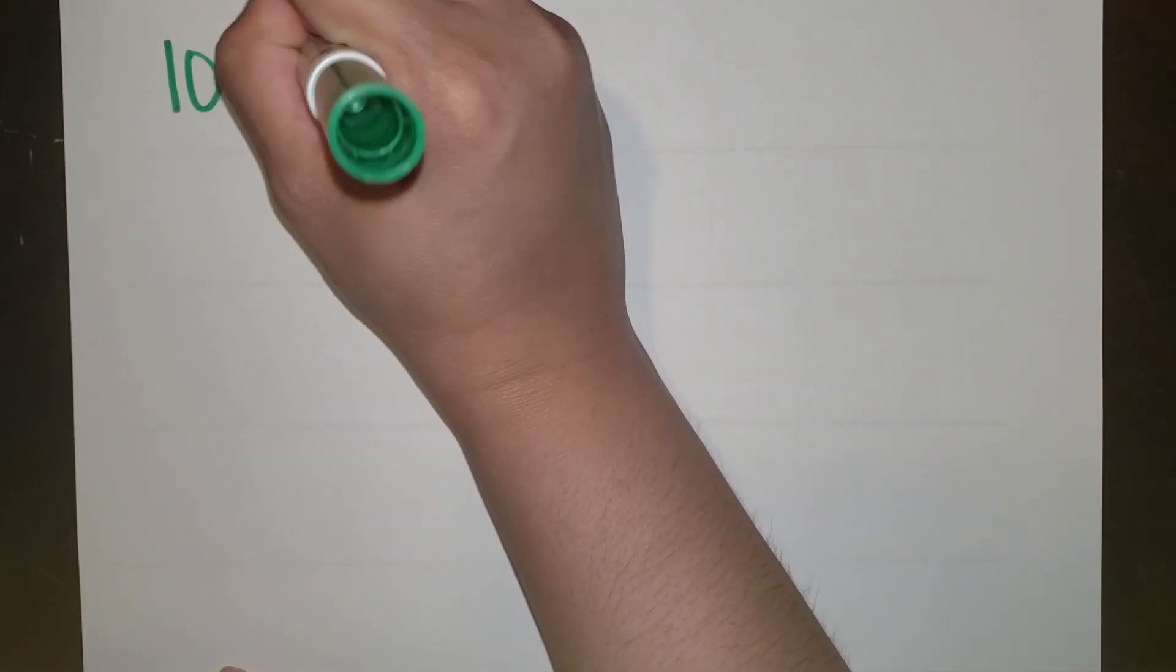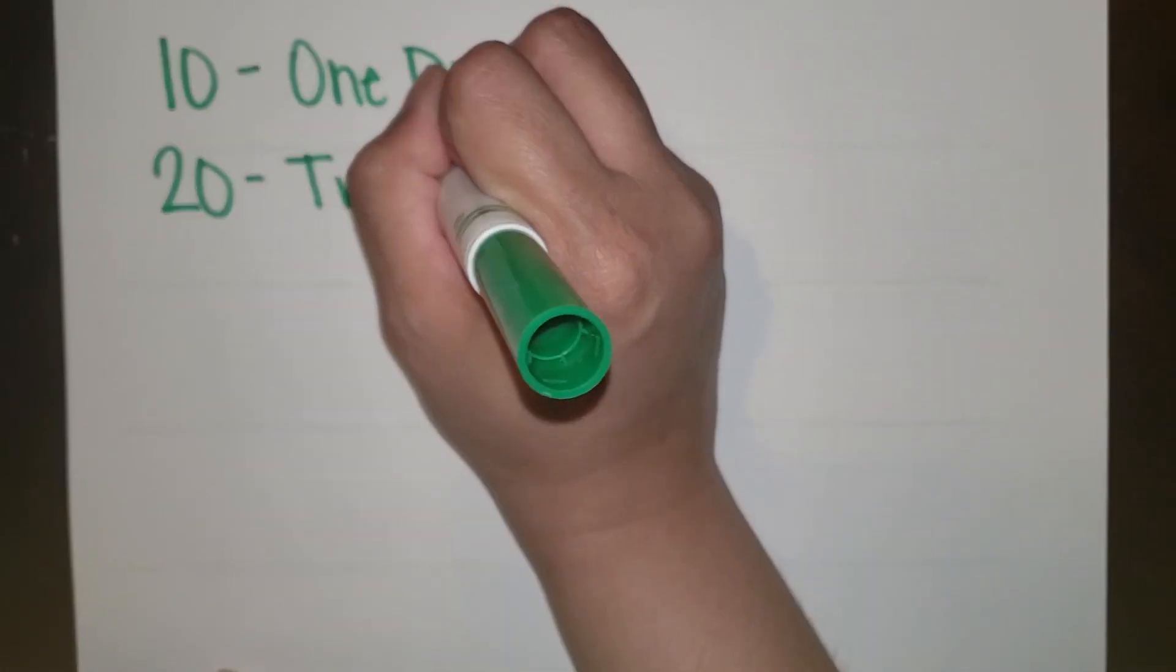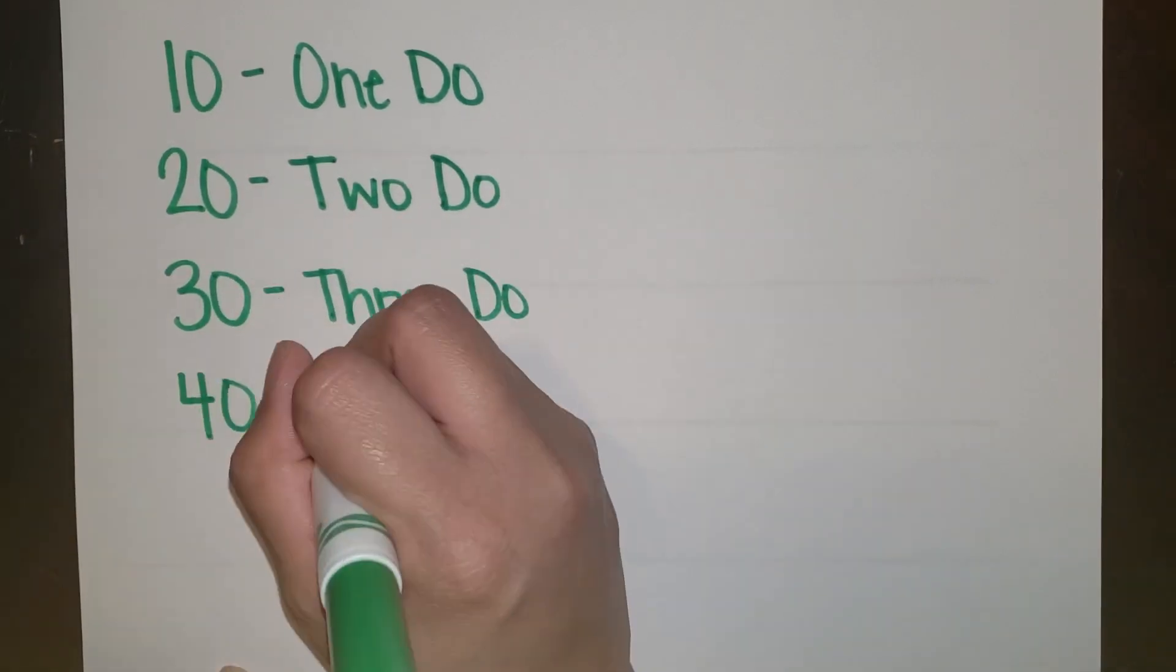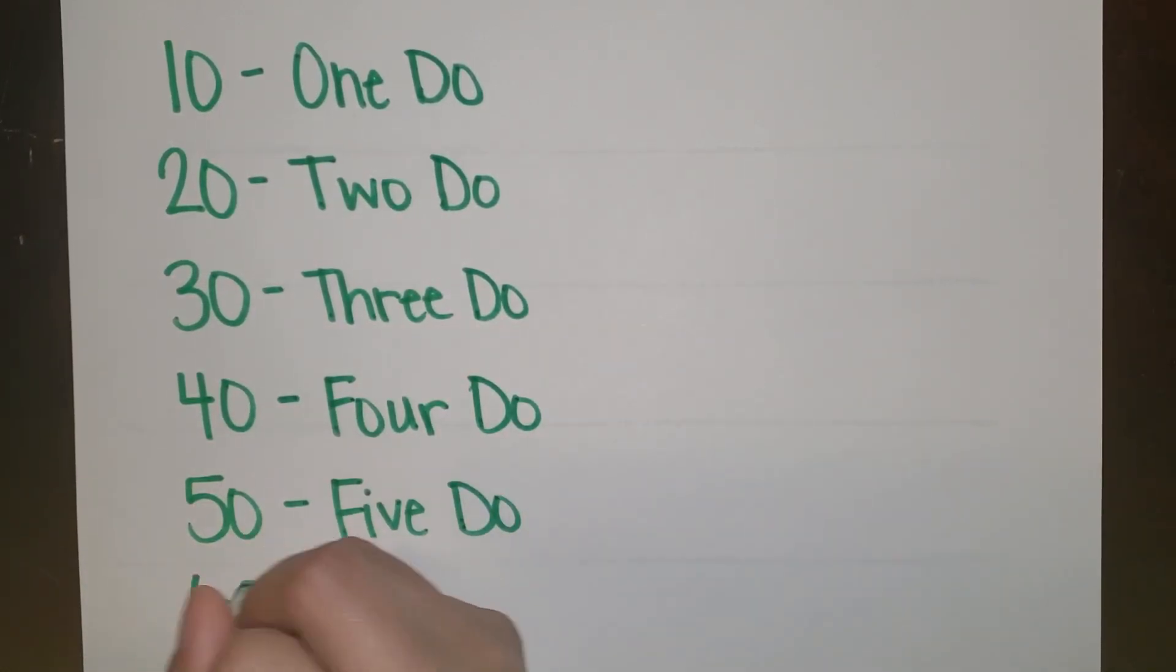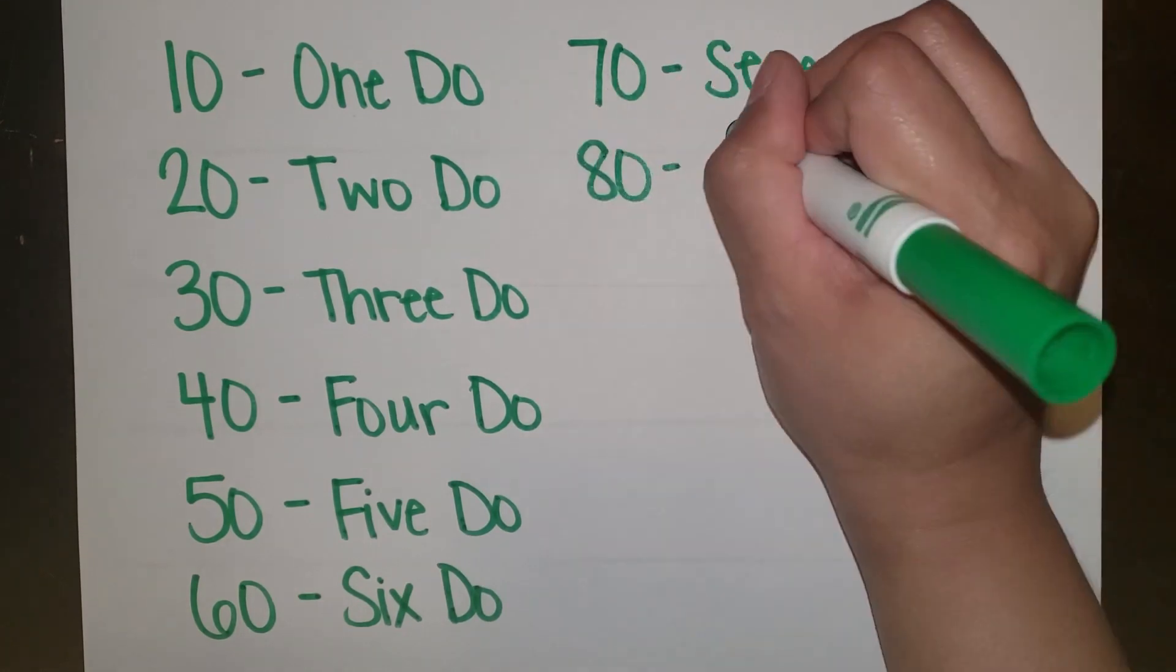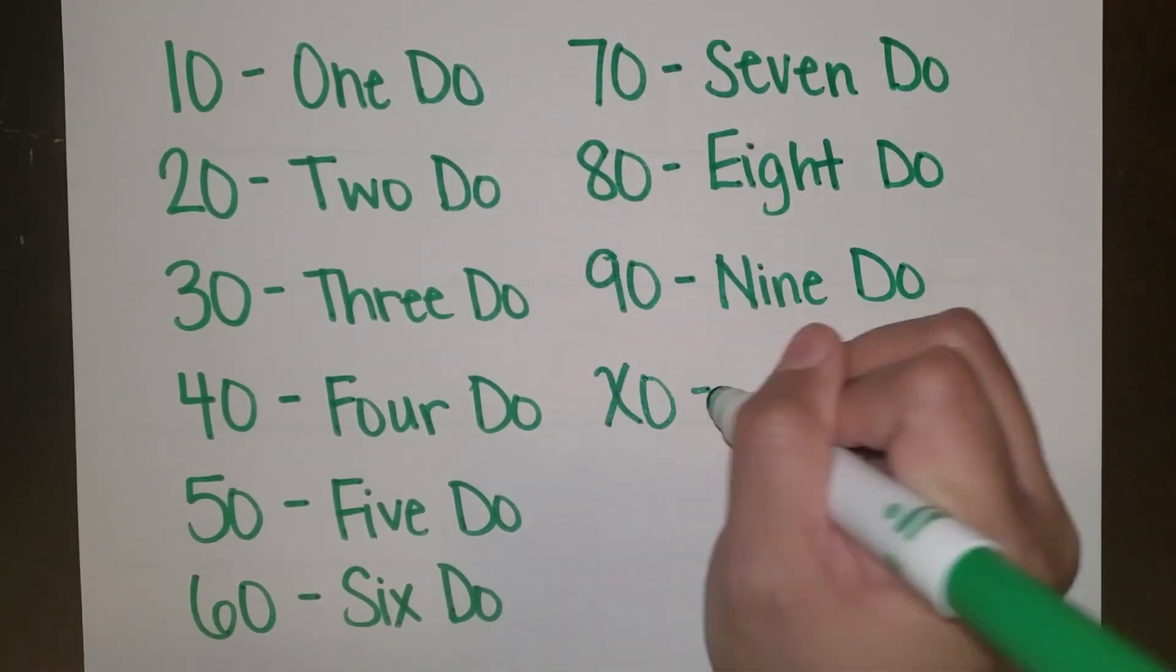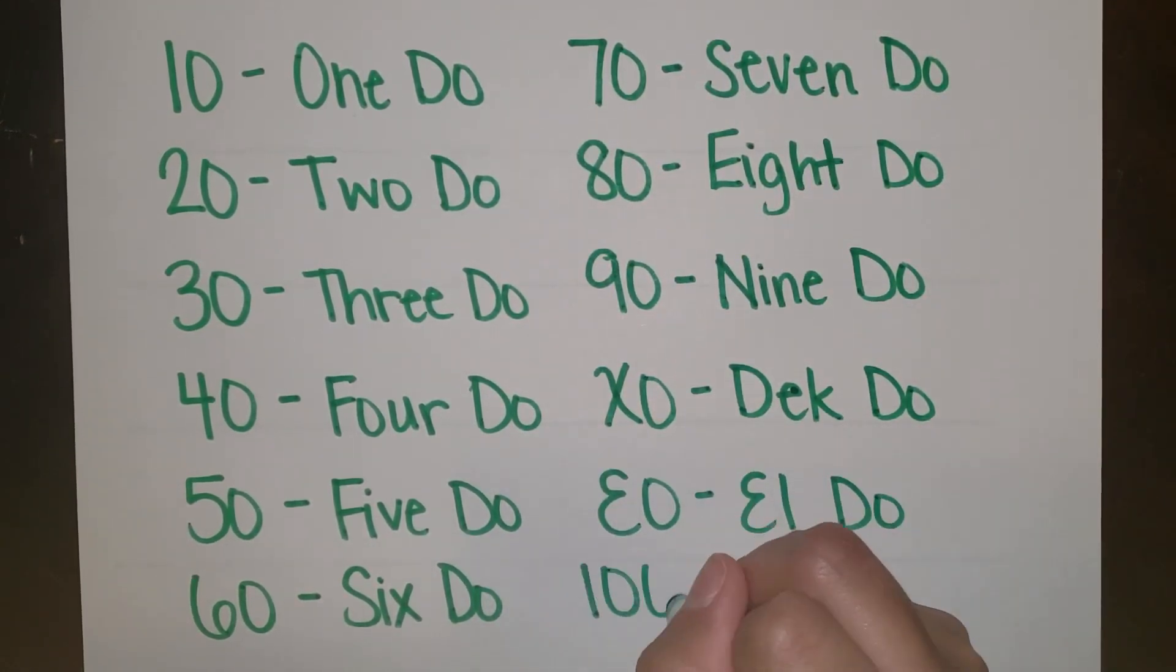We can then start counting by dozens: 1 DOE, 2 DOE, 3 DOE, 4 DOE, 5 DOE, 6 DOE, 7 DOE, 8 DOE, 9 DOE, DEC DOE, L DOE, 1 GROW.